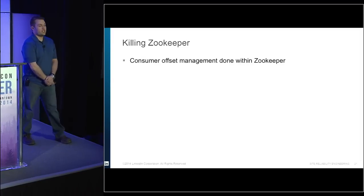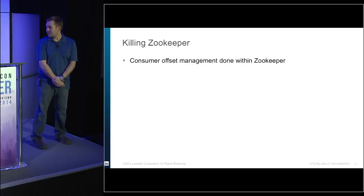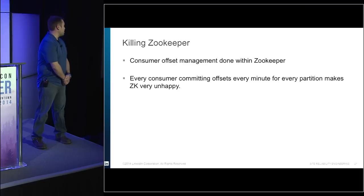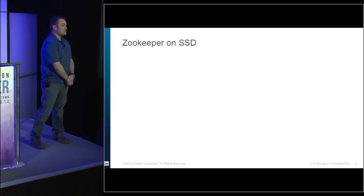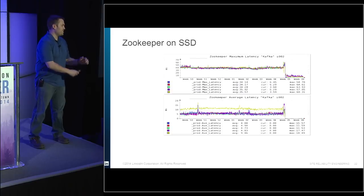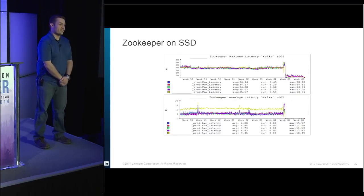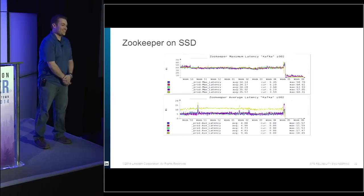Another issue was ZooKeeper. With Kafka 0.8, all consumer offset information is stored in ZooKeeper. We have 140,000 partitions, and every single one has at least one thing reading from it that periodically updates its offset to ZooKeeper — that's 140,000 writes. ZooKeeper couldn't scale. So we put ZooKeeper on SSDs. There were lots of arguments about whether that was a good idea, but we tried it and it worked really well. We dropped our average ZooKeeper latency down to zero milliseconds — we thought we broke it, but turns out that's just how it's supposed to be.